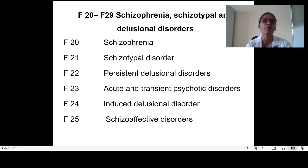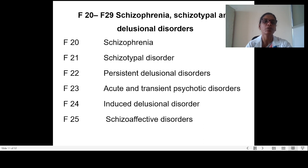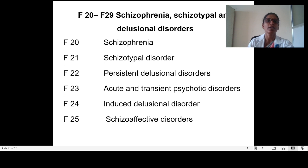Next is F20 to F29: Schizophrenia, schizotypal and delusional disorders. F20 is schizophrenia, F21 is schizotypal disorder, F22 is persistent delusional disorders, F23 is acute and transient psychotic disorders, F24 is induced delusional disorder, and F25 deals with schizoaffective disorders.